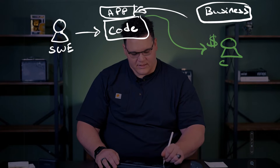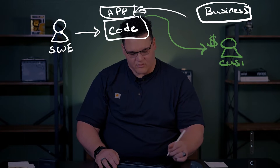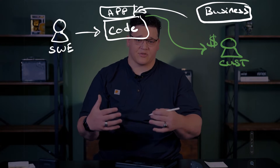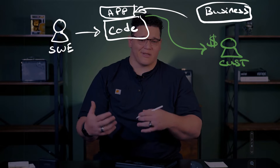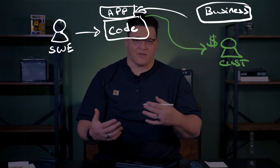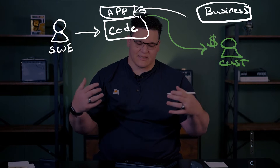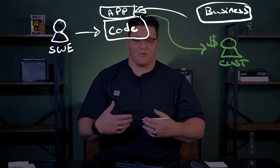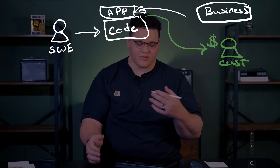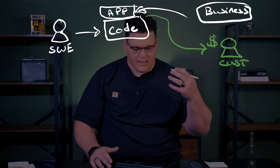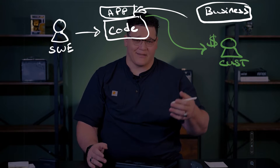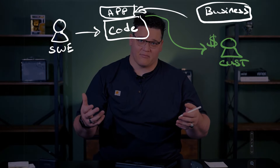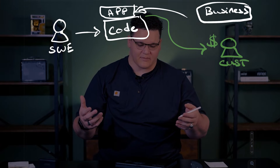This gives the business a competitive advantage or solves whatever problem — and in the end, in some way or another, it will make them money. So this is the role of a software engineer in short: the code that's written, whatever type of software engineer it is, the common thing is we have an app that we want to get out in front of customers, and we want to do that because it will make us money as a business.